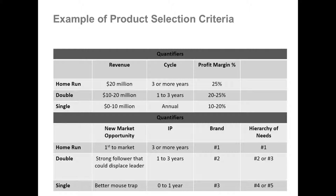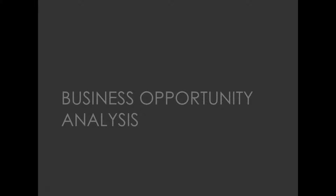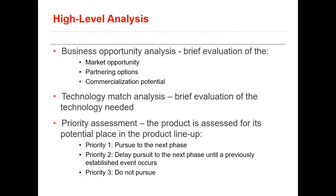Once the ranking is done, plot them in three categories. After making a selection, you must complete a high-level analysis of the business opportunity, including market opportunity, the potential partners needed to either produce or distribute the product, and the product's commercialization potential. The next analysis covers the technology you need to develop the product. Once this evaluation is done, prioritize the finalists into three categories: Pursue to the next phase, Delay pursuit until a predetermined event occurs, and Not pursue, at least for the foreseeable time.